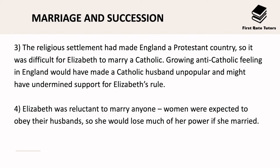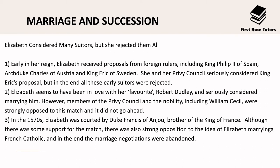Queen Elizabeth was reluctant to marry anyone, as women were expected to obey their husbands so she would lose a lot of power if she married. Early in her reign she received proposals from foreign rulers including King Philip II of Spain, Archduke Charles of Austria, and King Eric of Sweden. She and her Privy Council seriously considered King Eric's proposals but nearly all suitors were rejected. Queen Elizabeth does seem to have been in love with her favourite Robert Dudley and seriously considered marrying him, however members of the Privy Council and the nobility including William Cecil were really opposed to this match.